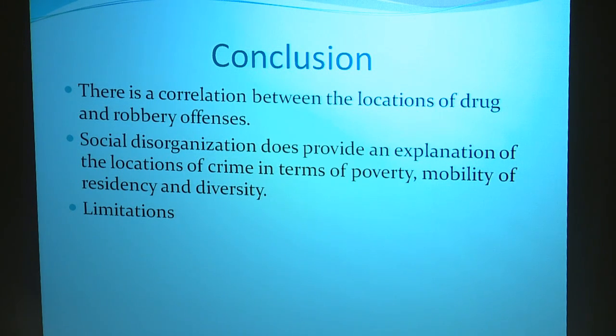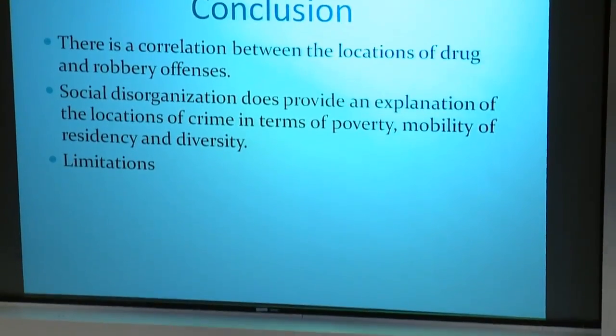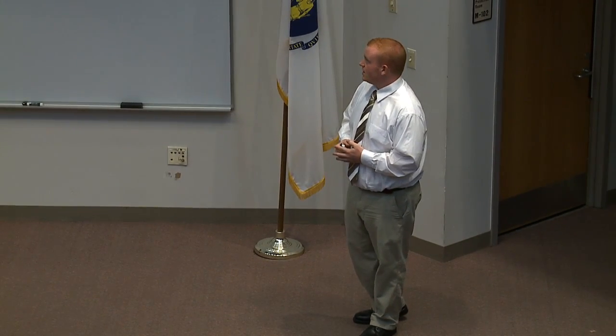In conclusion, my study found that there is a correlation between locations of drug and robbery offenses. The two hotspots for drug and robbery offenses fall in nearly the exact same locations as each other. When you look at the maps with the social disorganization variables, the theory does provide an explanation for the location of these crimes — looking at the areas that are disorganized versus organized, you see the difference in crime hotspots, at least in terms of poverty, mobility of residency, and diversity.